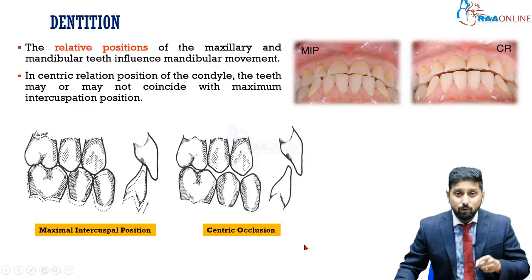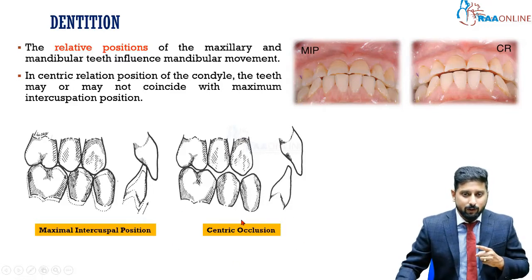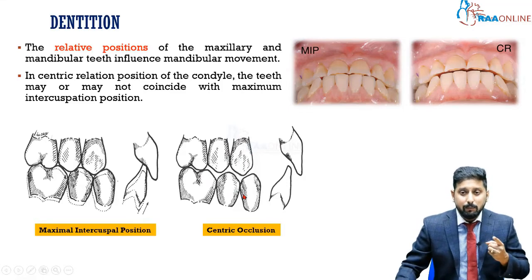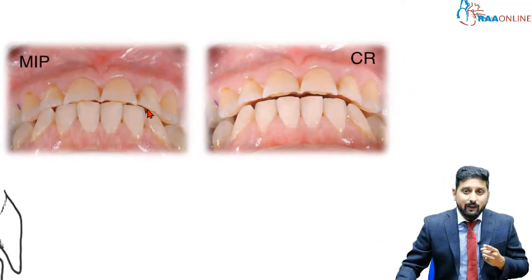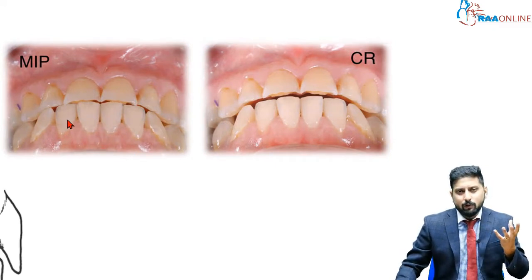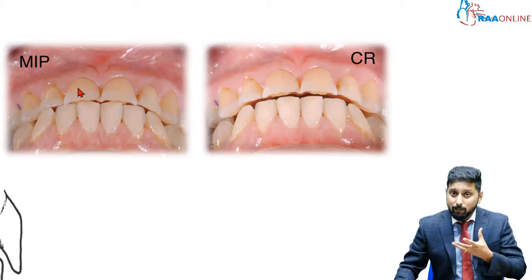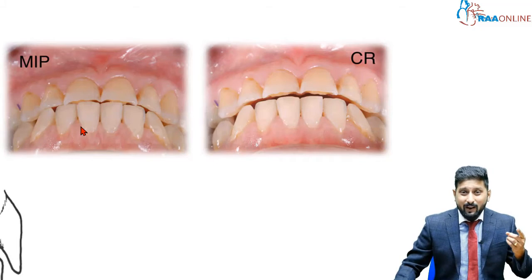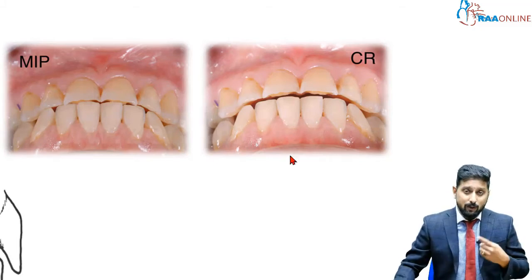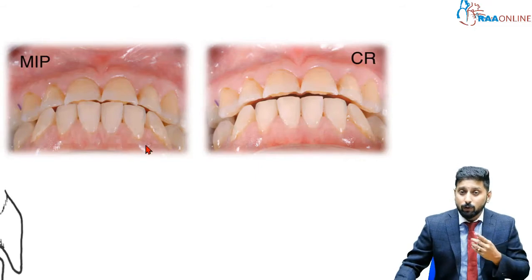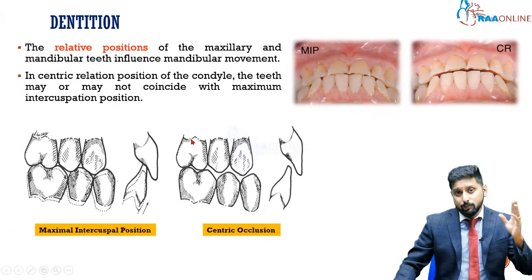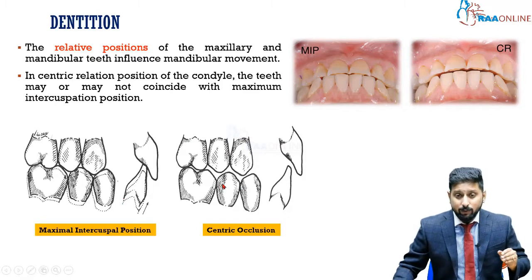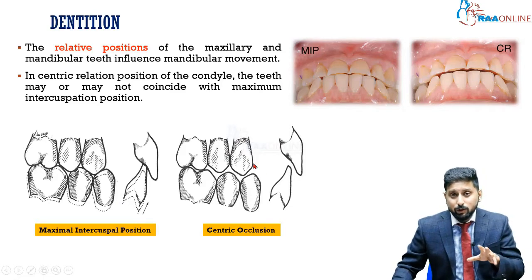In the centric occlusal position, the teeth do not perfectly meet together, unlike in MIP where maximum teeth come into contact. When a patient is guided into the centric occlusal position, most teeth do not contact — only the posteriormost teeth contact. So there are two types of occlusion existing in dentate individuals.